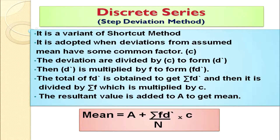Now we discuss the step deviation method, which is a variant of the shortcut method. It is adopted when the deviations can be divided by some common factor c. For example, if deviations are 10, 20, 30, 40, we can divide them all by 10 as a common factor.